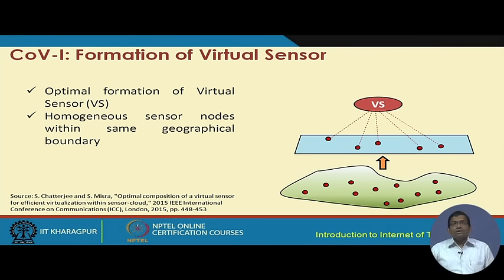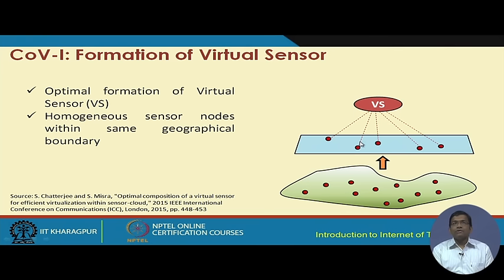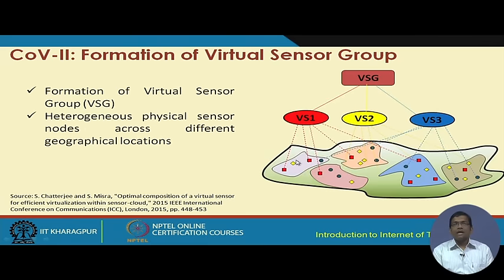For the formation of virtual sensors: if all sensors are co-located in the same geographic location, they are virtualized and a virtual sensor is formed from a subset of those physical sensors. In this scenario, for optimal composition it is considered that at the physical level we have homogeneous sensor nodes — all with the same specifications — and they are grouped together to form the virtual sensor node.